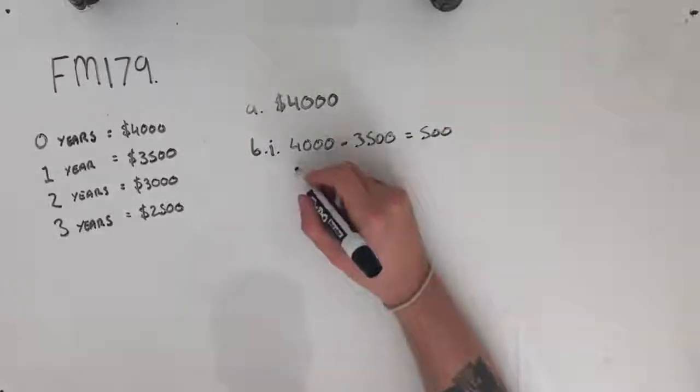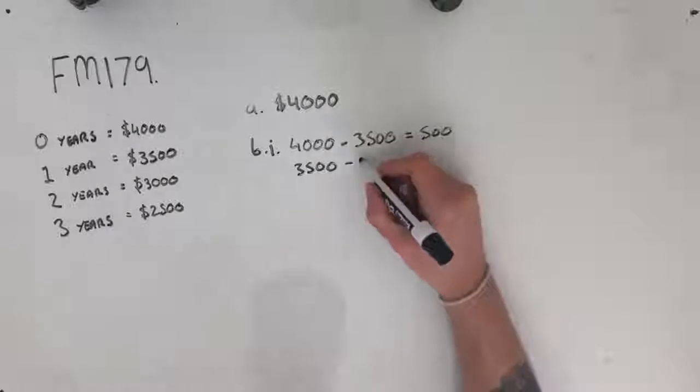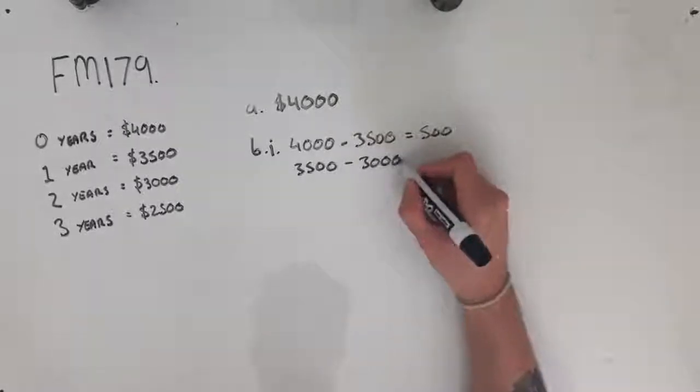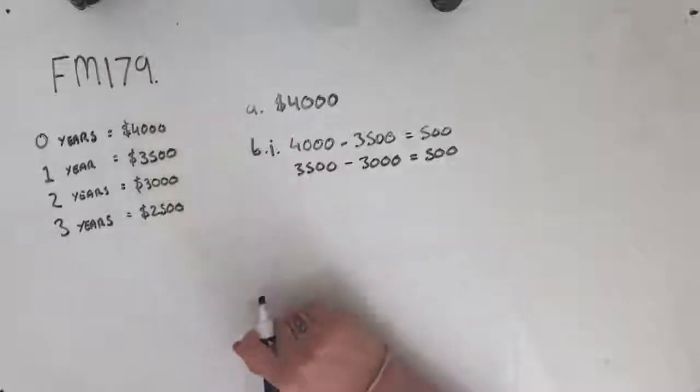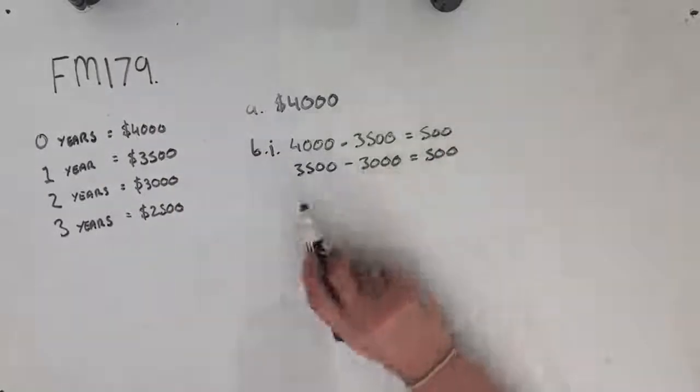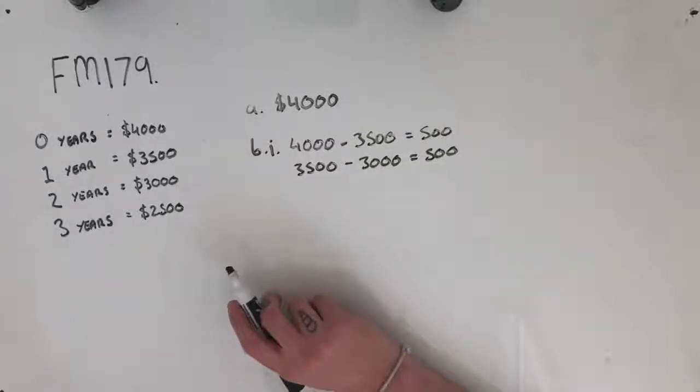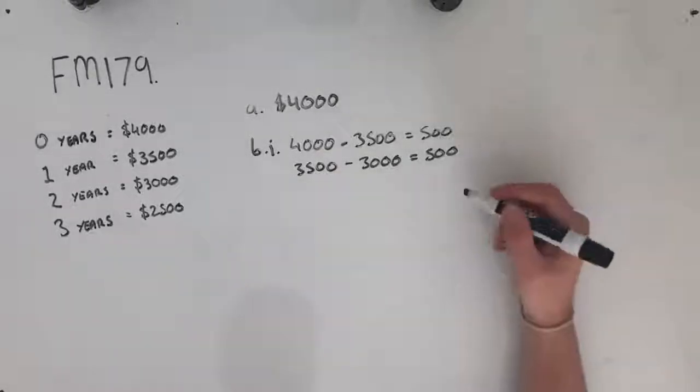You could take the value after one year, $3,500 and subtract the value after two years. And you could do this with any combination of two years, but as long as you have an equation that equals 500 and it's one year subtracted from the year before it, then you should be sweet. There's a few examples there.